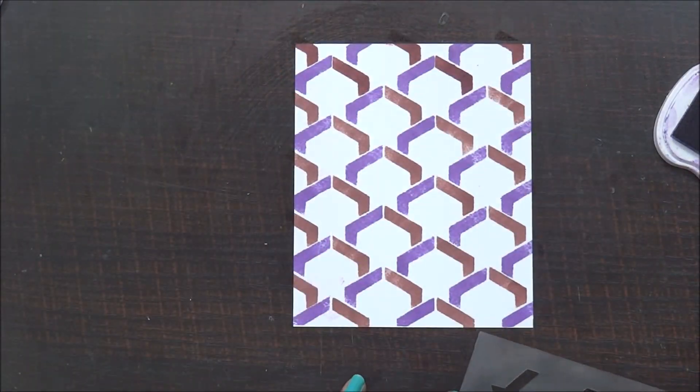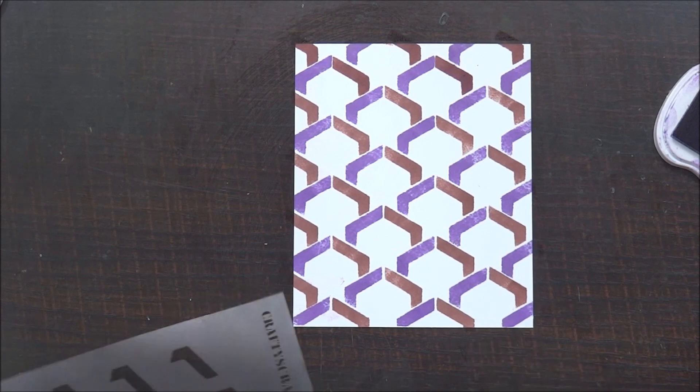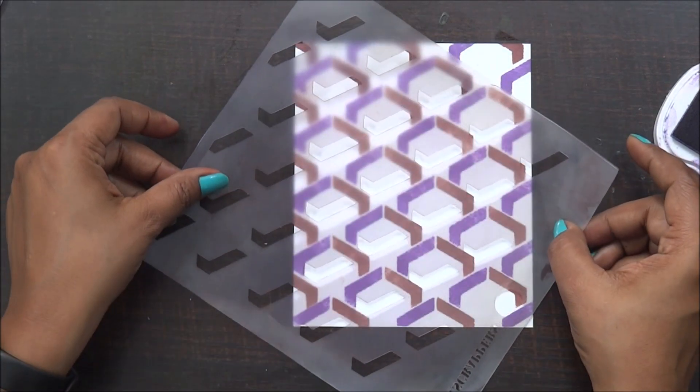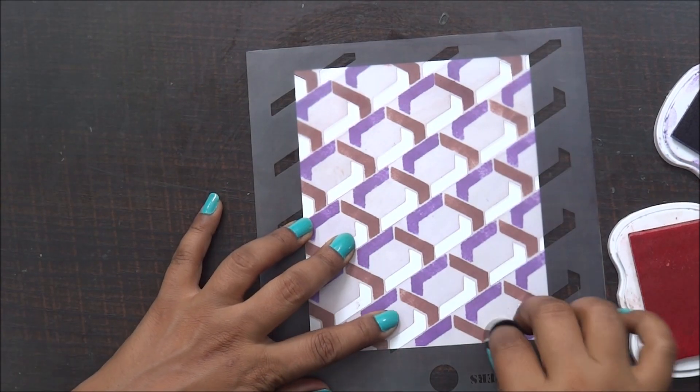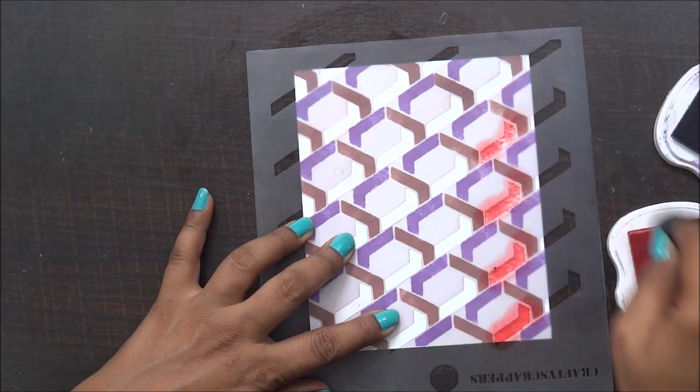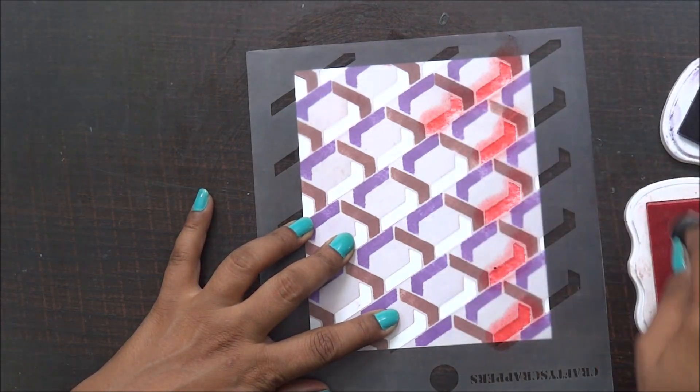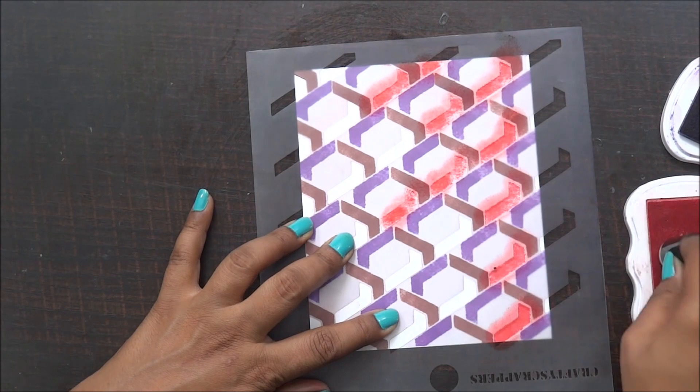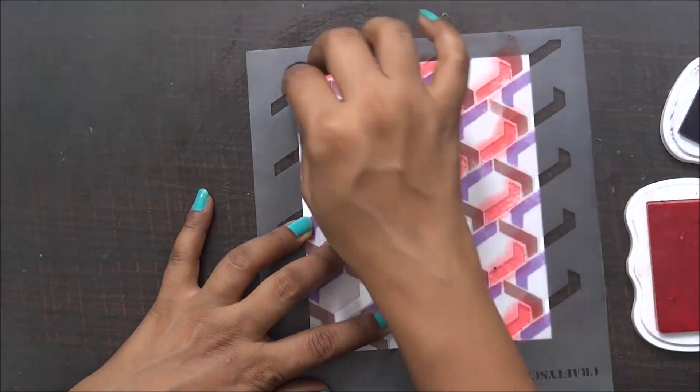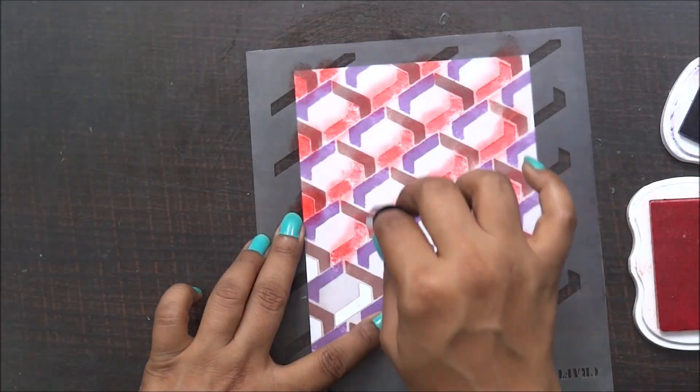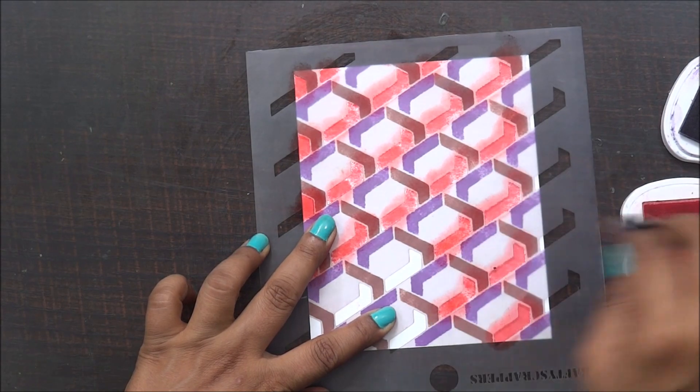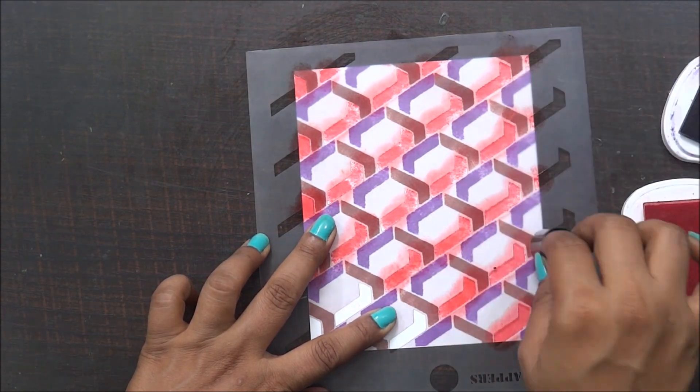Just make sure that before adding different colors and using it in the reverse way or the side way, you clean your stencil very well with a wet wipe. So once I'm done with the top layer, now I have reversed my stencil and now I am just using the third shade and creating my pattern.